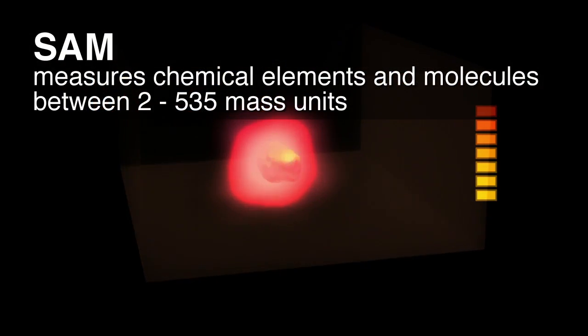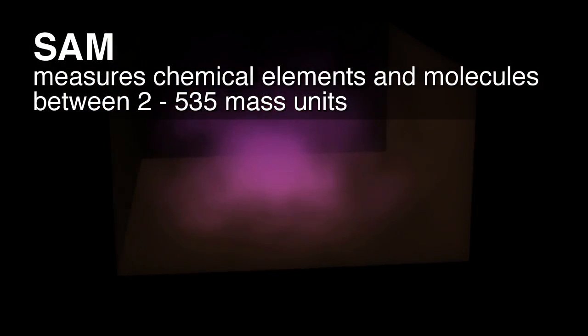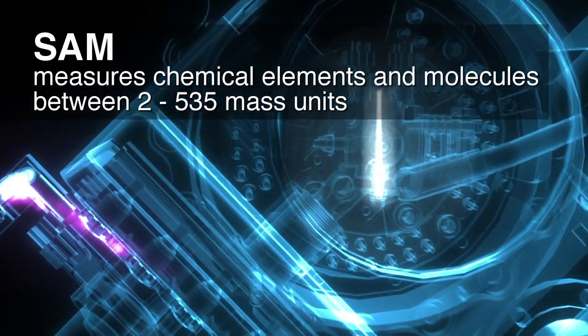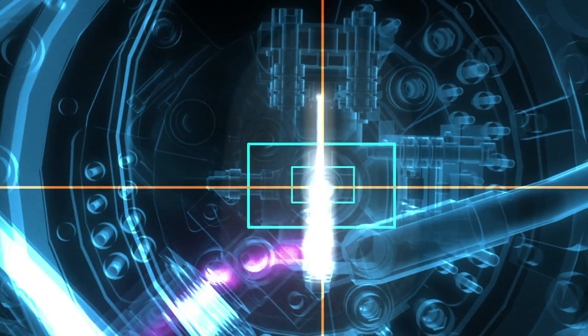SAM measures chemical elements and molecules in a mass or size range between 2 and 535 mass units, and we do this by looking at gases.